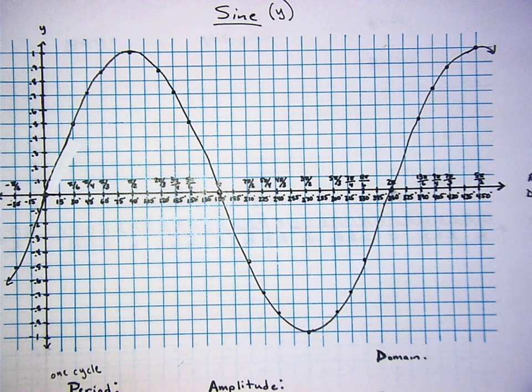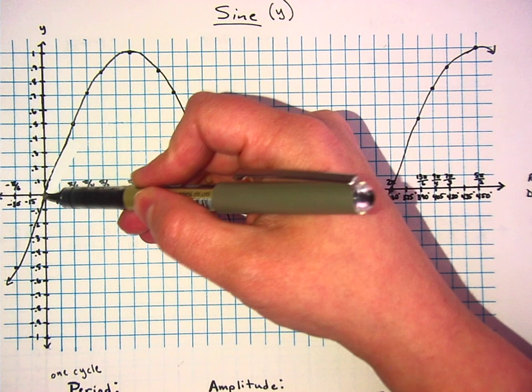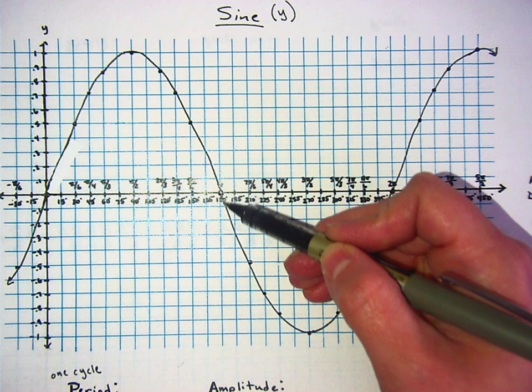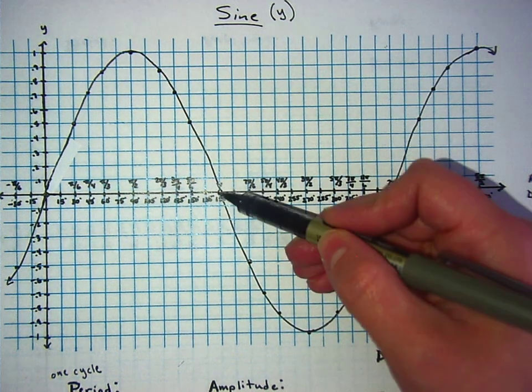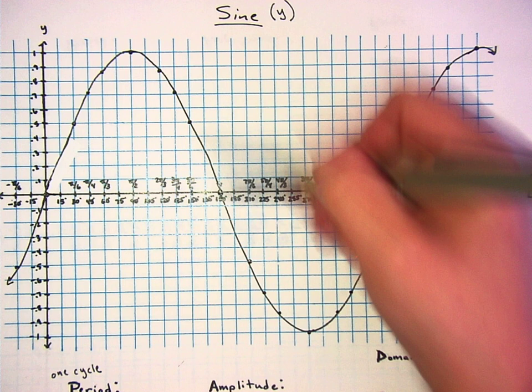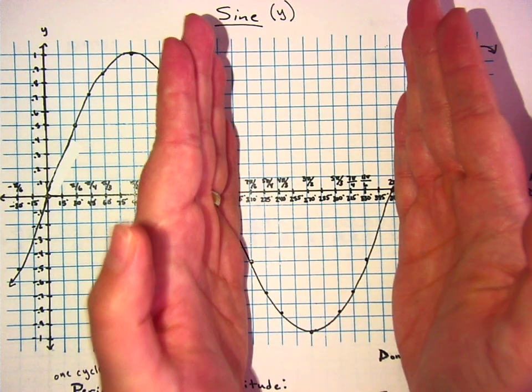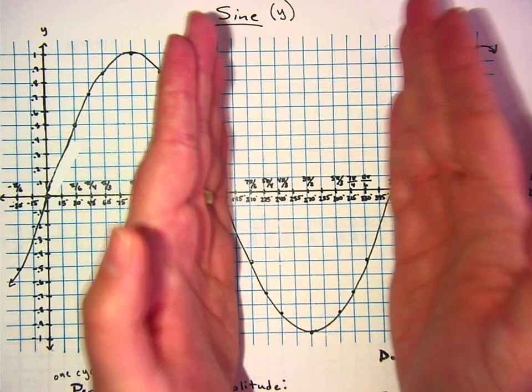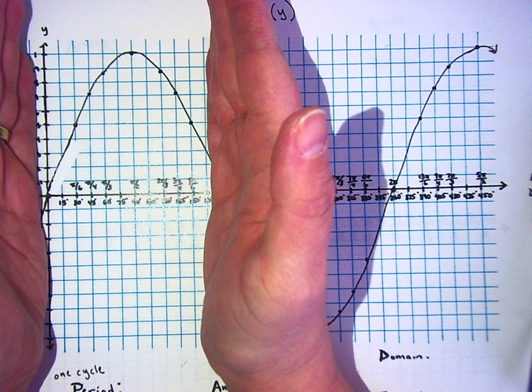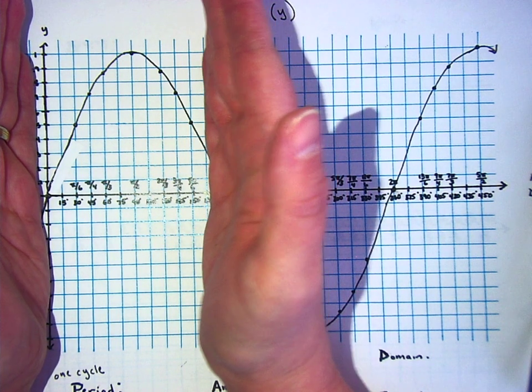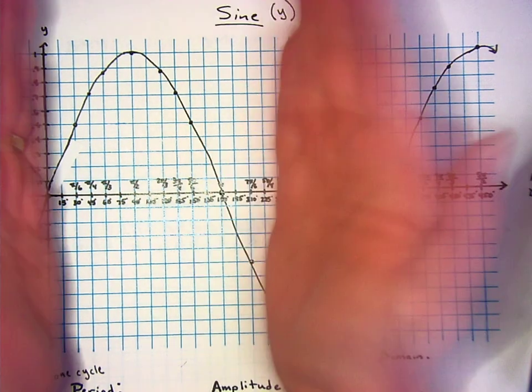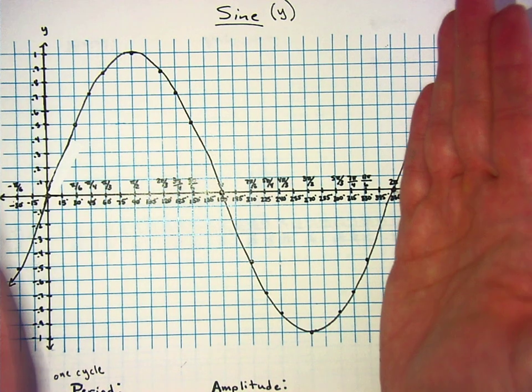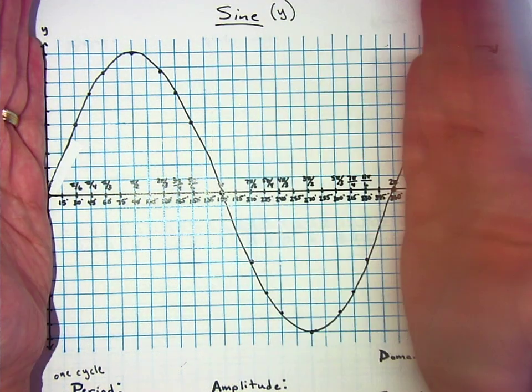Can you see that it starts at zero, goes up, comes back down, then it goes down below. Is this the same thing as it was previously? Is this the same as this? No. I mean, they are very similar, but one's positive, one's negative, right? And that does make them different. So this is a cycle.